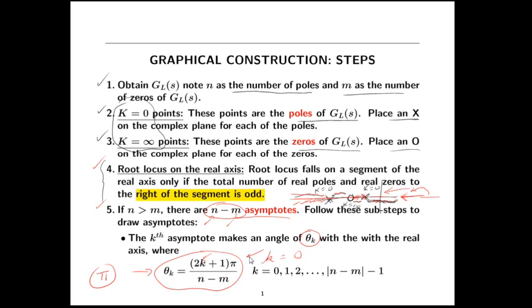The asymptote angles are always a standard set of angles. For instance, if n minus m equals 2, then for k=0 you get pi over 2, and for k=1 you get 3 pi over 2 — so asymptotes at 90 and 270 degrees. When n minus m equals 3, you get asymptotes each separated by 120 degrees. We'll experience that in some later examples, but the key point is that the asymptote angles are a standard set.